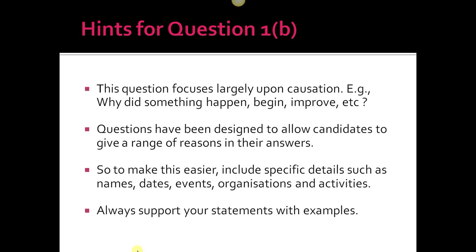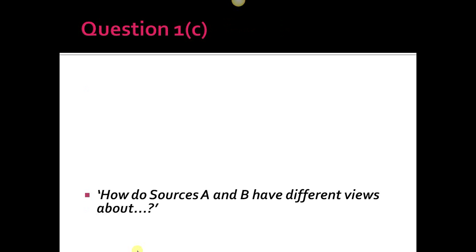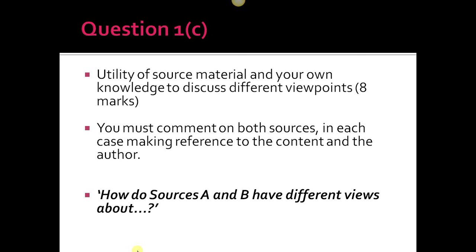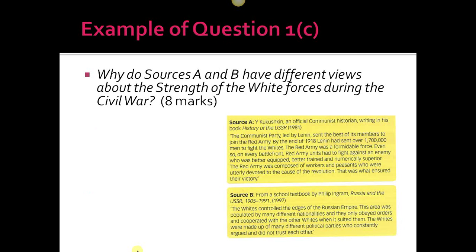Question 1c is a comparative question. They want you to recognize why there are two different views. It's the utility of source material and your own knowledge to discuss different viewpoints. It's an eight-mark question. You must comment on both sources in each case, making reference to the content and the author. How do Sources A and B have different views about the strength of the White forces during the Civil War?